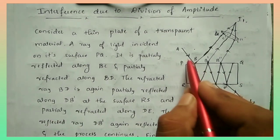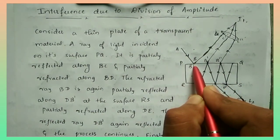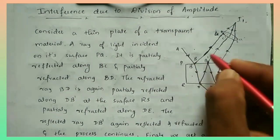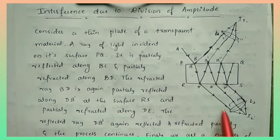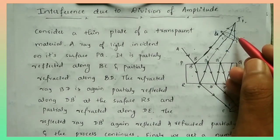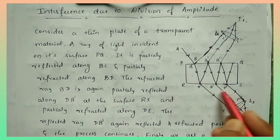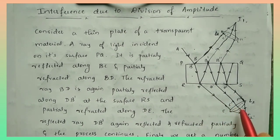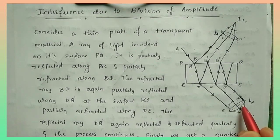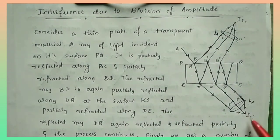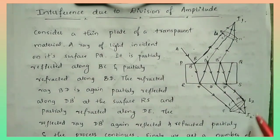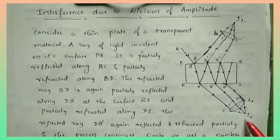The incident ray AB is refracted along BC, reflected along BD, and transmitted along DE. The same process continues: DB' is the transmitted ray, B'D' is the reflected ray, and D'E' is the transmitted ray. These combined parallel reflected and transmitted rays form interference patterns at I1 and I2 via lenses L1 and L2.